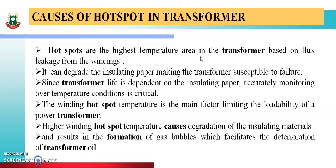Hot spots are the highest temperature areas in the transformer based on the flux leakage from the winding. Hot spot मतलब — जो हमारे transformer की winding रहती है, उसमें temperature increase होता है, और उसके वज़े से उसके winding से flux leakage होता है। तो उसको बोलते हैं hot spots। And it can degrade the insulating paper, making the transformer susceptible to failure। जिसके वज़े से transformer के insulating paper की failure हो जाती है।